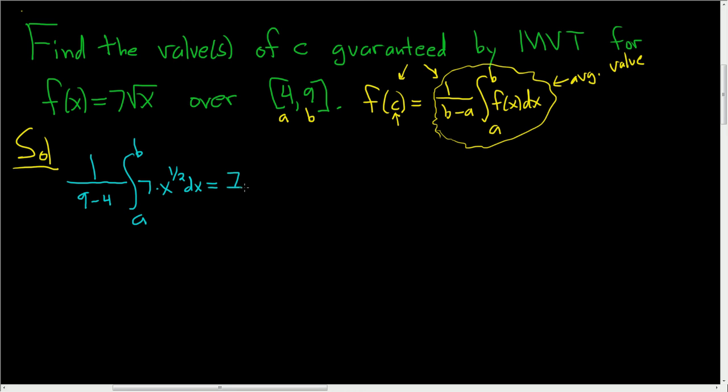So this is going to be 1 over 5. And then we have the 7. So it's really 7 fifths. And then we have the integral from 4 to 9 of X to the 1 half DX. Let's be really careful. So this is 7 fifths. When we integrate this guy we add 1. So we get X to the 3 halves. And when we divide by 3 halves we really multiply by the reciprocal. So 2 thirds. And we're integrating from 4 to 9.